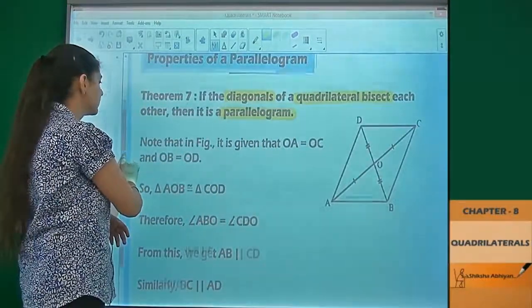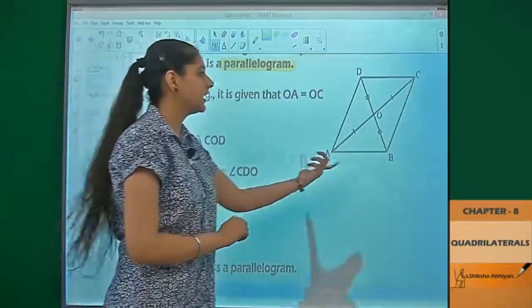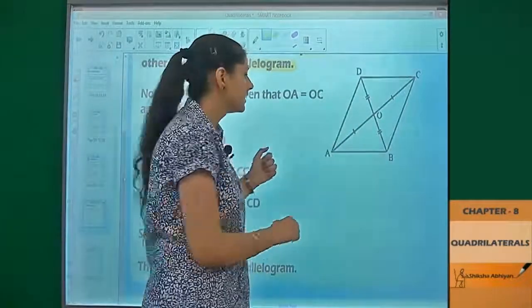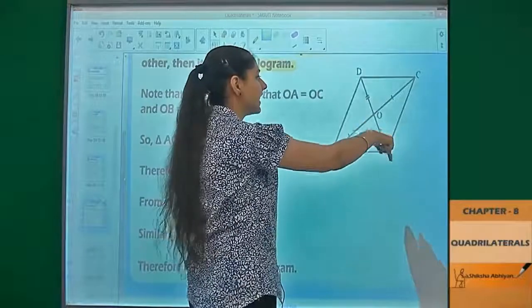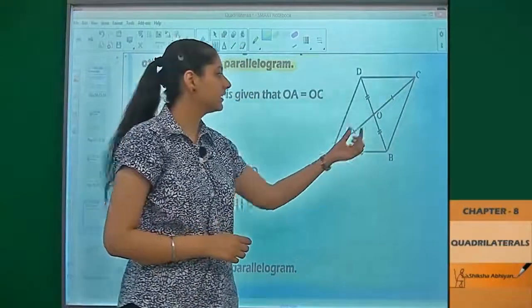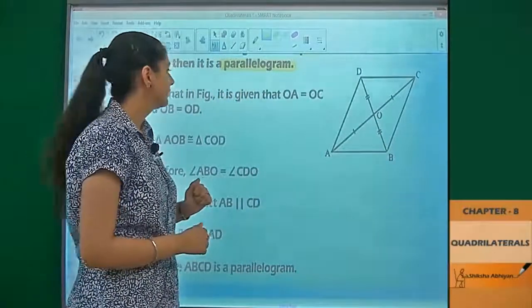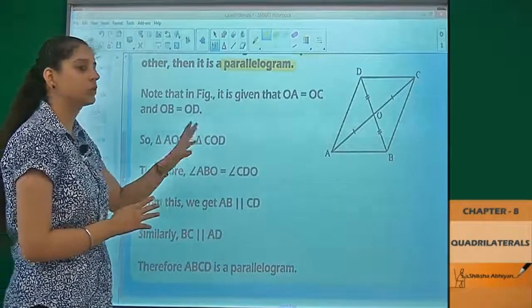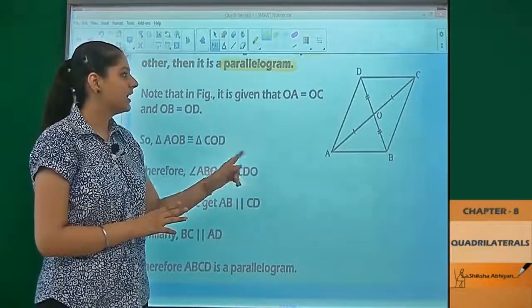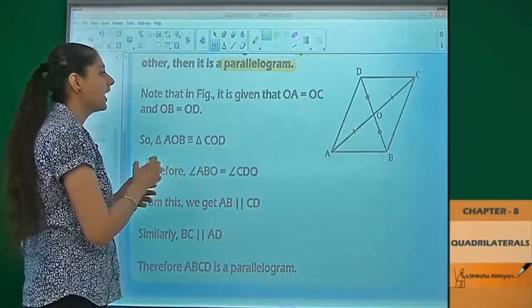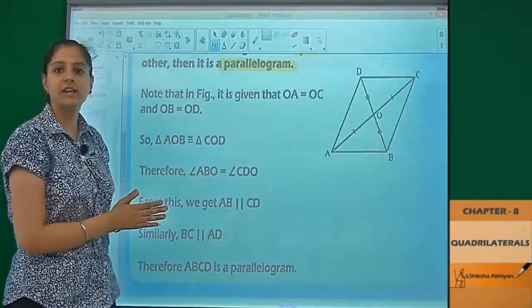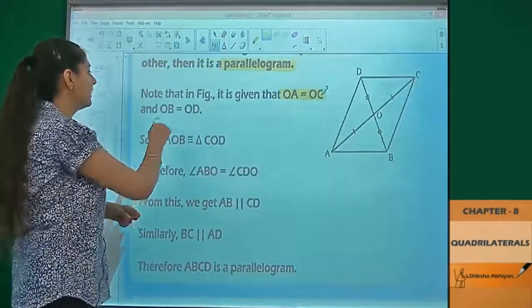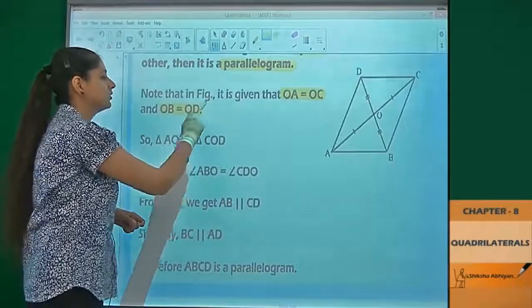Let us prove this theorem. We are given a quadrilateral A, B, C, D. AC and BD are the diagonals and they are cutting each other at O. We are given that the diagonals bisect each other, so OA is equal to OC and OB is equal to OD.